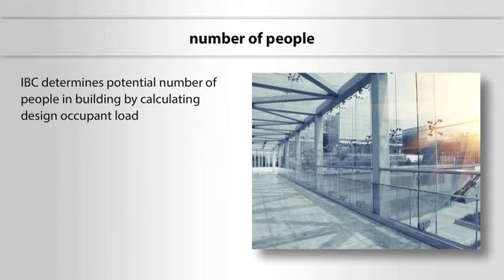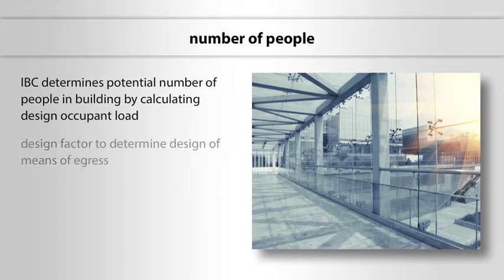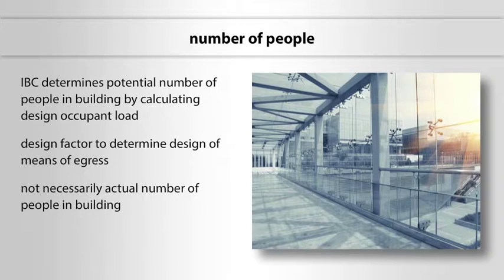The IBC determines the potential number of people in a building by calculating the design occupant load. The occupant load is a design factor to determine the design of the means of egress. It is not necessarily the actual number of people that may be in a building.